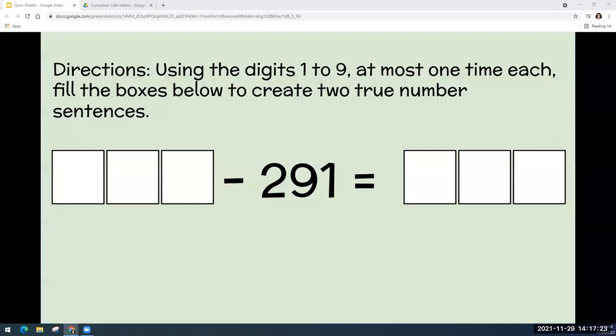Let's try another one. During this problem, it's still the same concept, but it's asked in a different way. So we have to use the digits one through nine at most one time each to fill the boxes to create two true number sentences. So again, go ahead and press pause while you work on it. And then once you're ready to move on, go ahead.